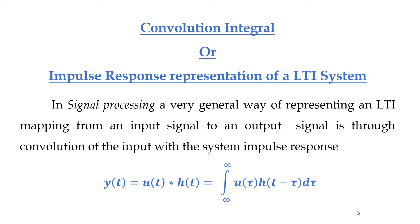Convolution integral or impulse response representation of an LTI system. In signal processing, a very general way of representing an LTI system mapping from an input signal to an output signal is through convolution of the input with the system impulse response. The convolution integral is given by: where u is the input signal, h is the impulse response of a linear time invariant system, and y is the output.